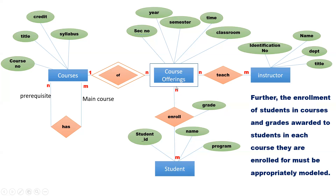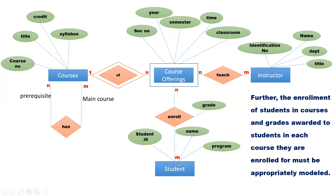A student can enroll for multiple course offerings, and a course offering can be attended by multiple students. Hence, this is also a many-to-many relationship. This is the final ER diagram for the description shown in the beginning. Thank you.